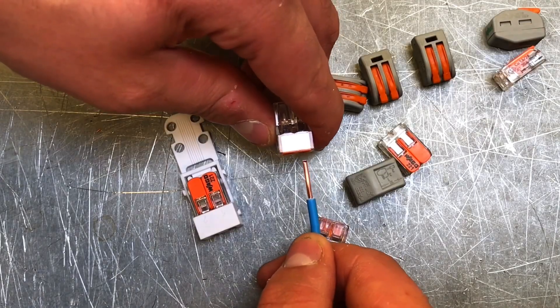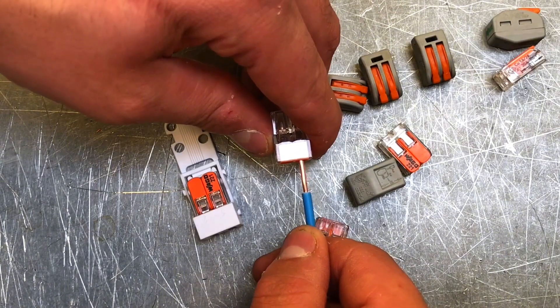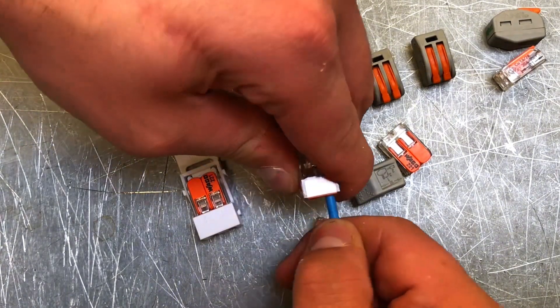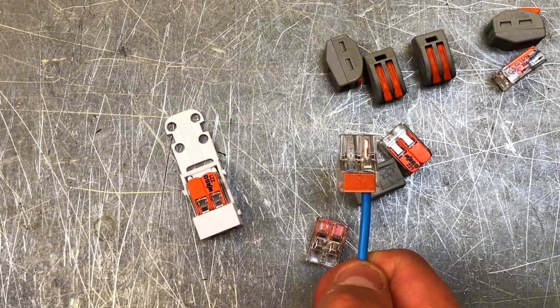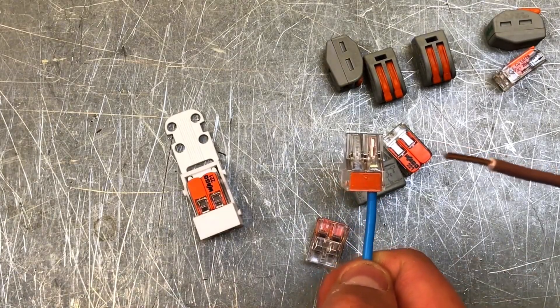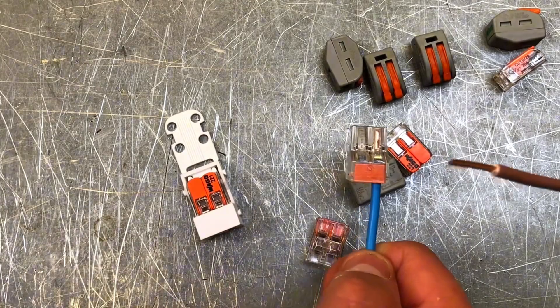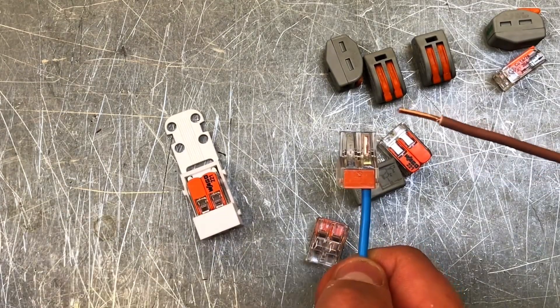Can you show me how easy it is to push a conductor into the 773 star Wago connector? This is just a push fit. You simply push the conductor in and you can see that it's made the connection. However, I wanted it to be a line conductor and not a neutral. Can you get that one out for me please?